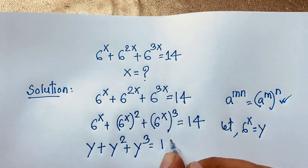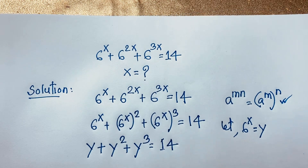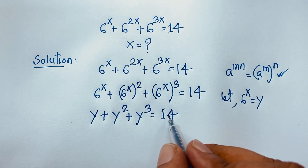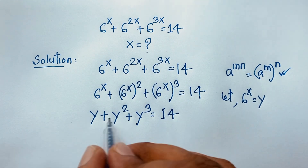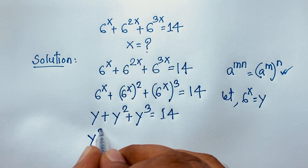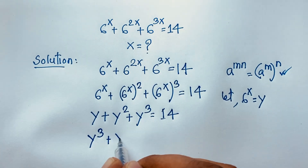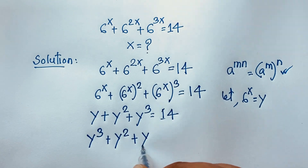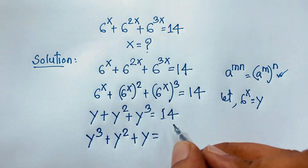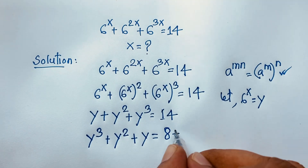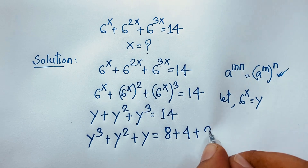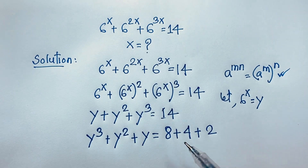Now you can see this 14 — it will be 8 plus 4 plus 2. So we rewrite: y cubed plus y squared plus y equals 8 plus 4 plus 2. You know that 8 plus 4 plus 2 equals 14.